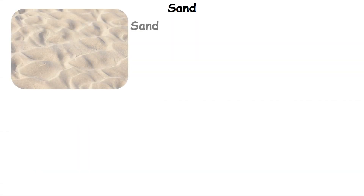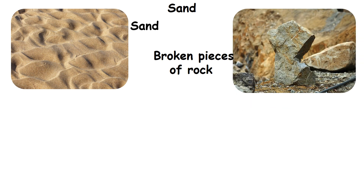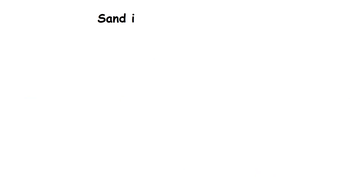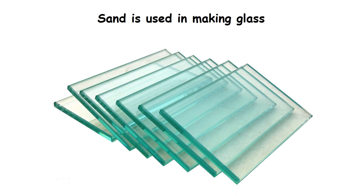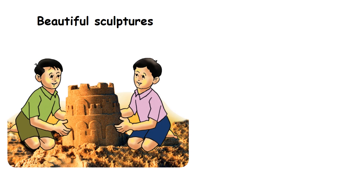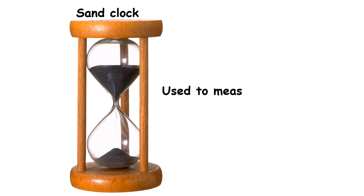Sand. Sand is formed from broken pieces of rock over a long period of time. Sand is mixed with cement to construct buildings. Sand is also used in making glass. Beautiful sculptures can be made with sand — this is called sand art. Sand clocks were used to measure time in the olden days.